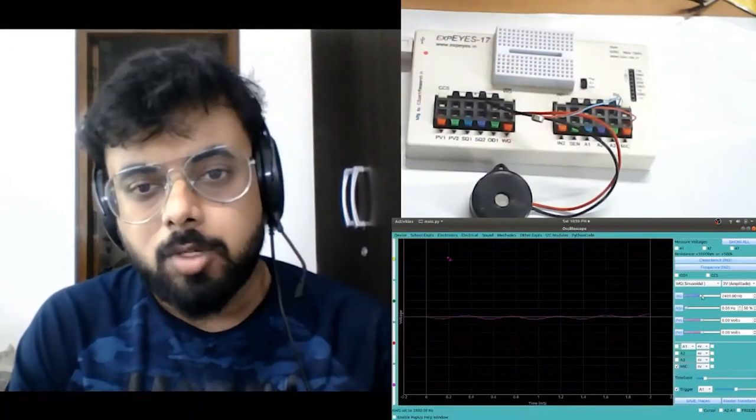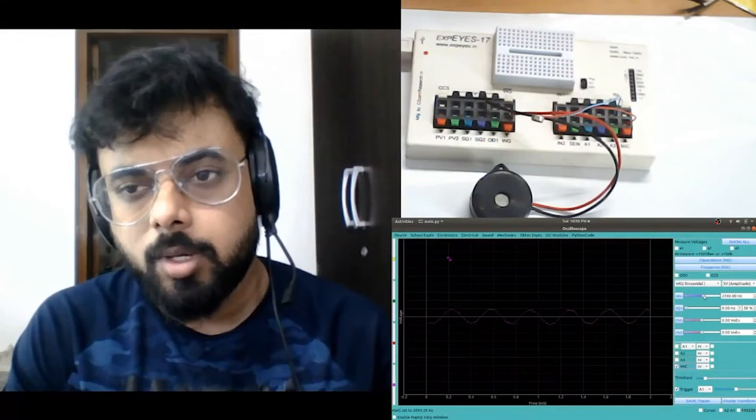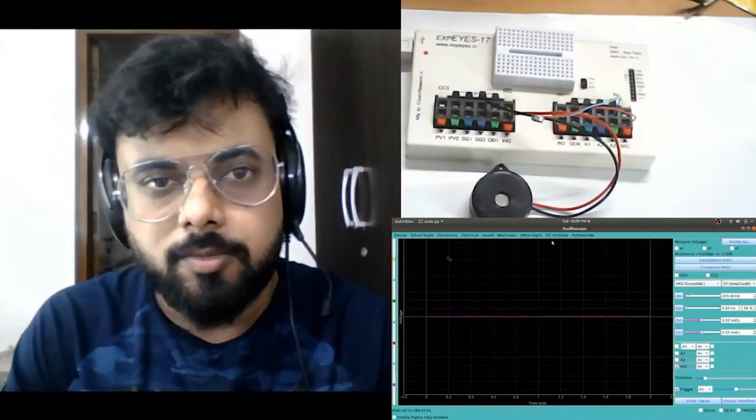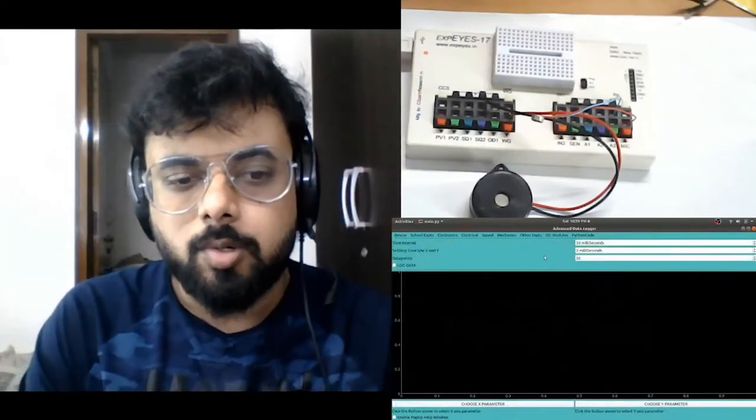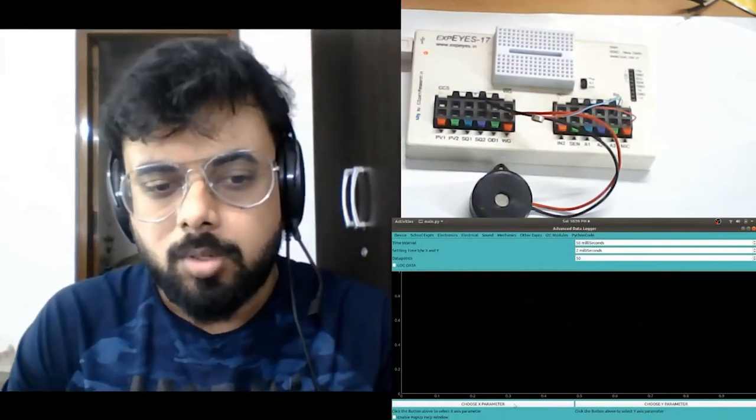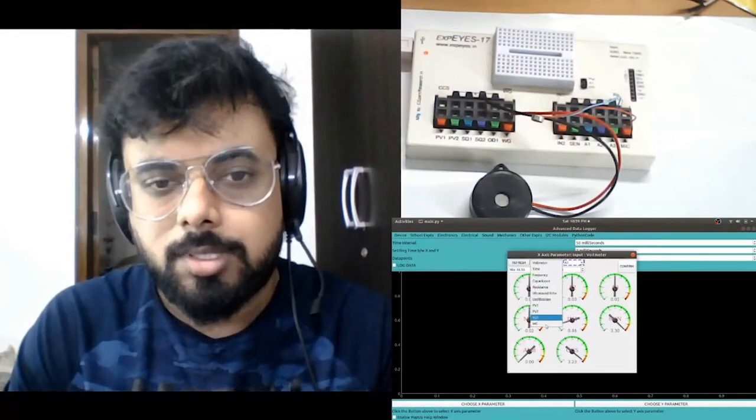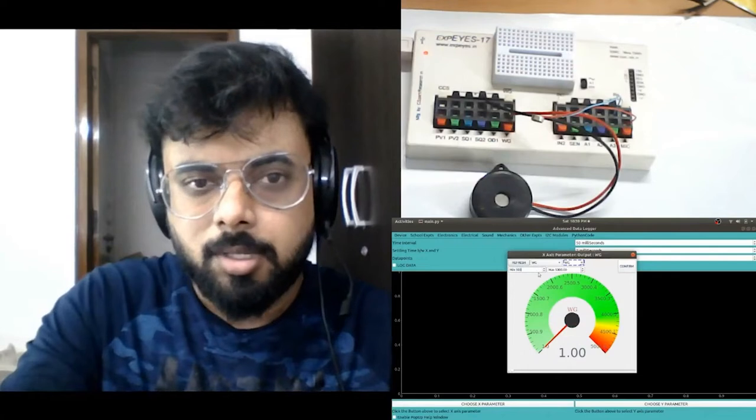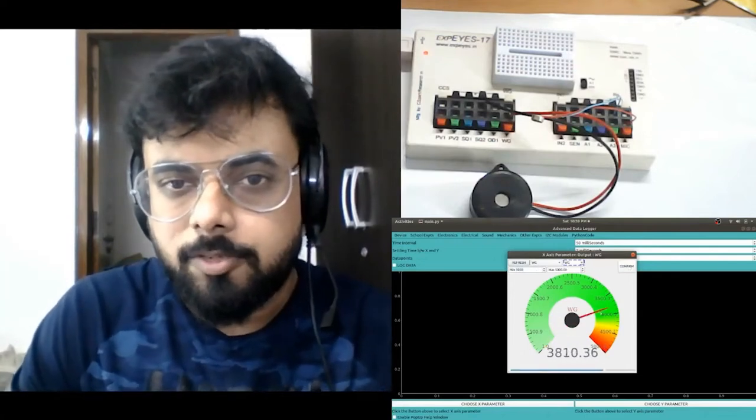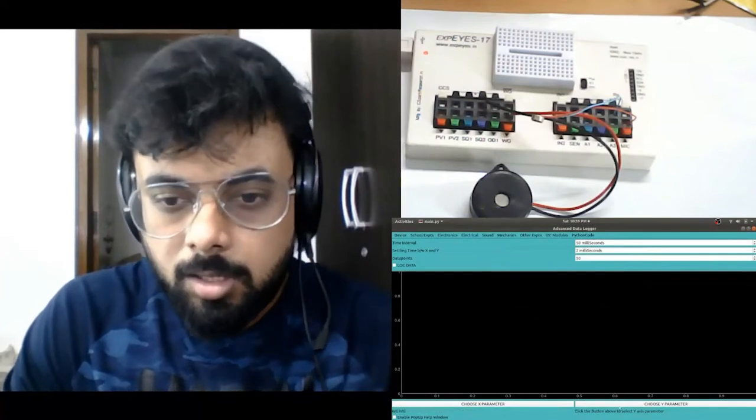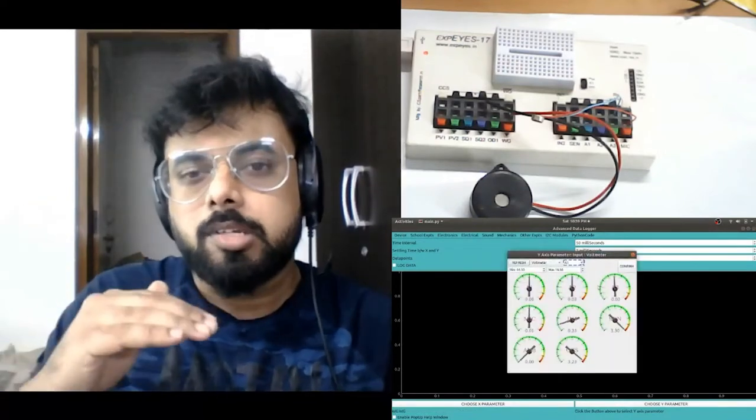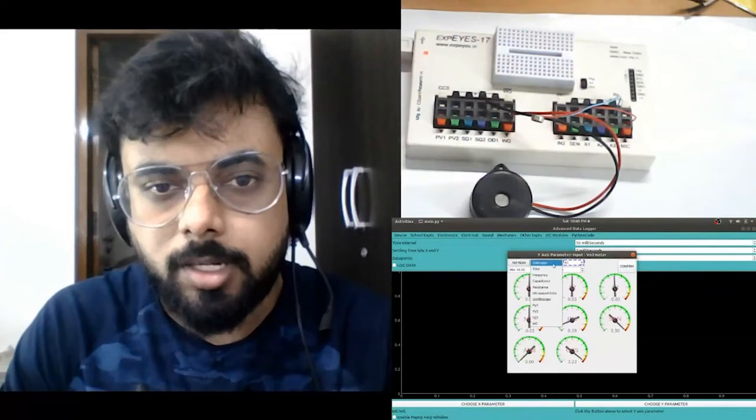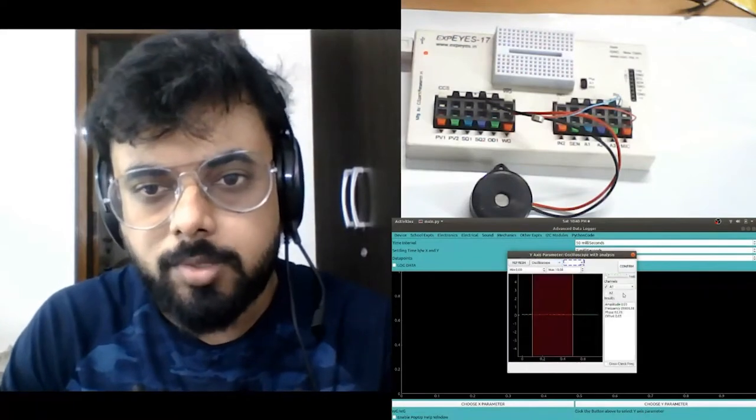Like I told you earlier, the loudness of this buzzer is a function of frequency. Now what if I want to find out where is this loudest? I need to sweep the entire frequency region and then find out the amplitude at each point. For that we have the advanced data logger which allows you to measure one parameter as a function of another. I'm going to choose the x parameter to be the frequency of the waveform generator which is applied to the buzzer. Let's go from 1000 hertz to 5000 hertz.